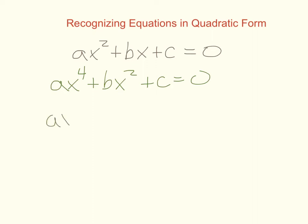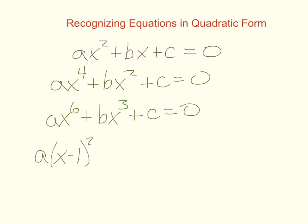For instance, x to the sixth plus b times x to the third plus c is quadratic form. We don't need just a plain x here — you could have a compound expression that is squared in the first term, raised to the first power in the second term, and absent in the third term. That's still quadratic form, and you could solve it by factoring or the quadratic formula, just like the original quadratic equation.